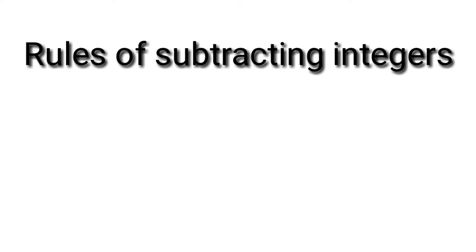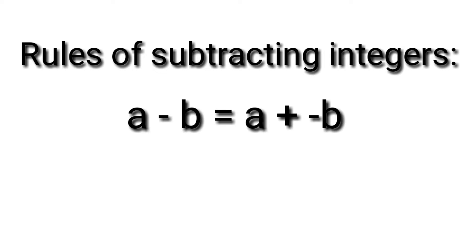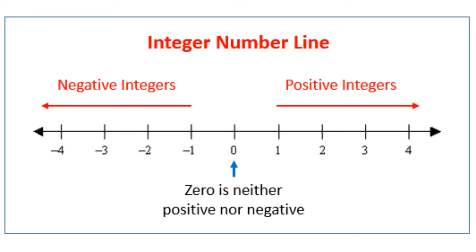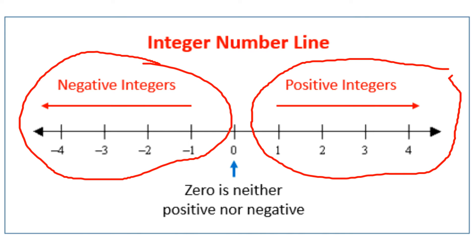We have rules for subtracting integers. These are: a minus b equals a plus negative b, and a minus negative b equals a plus b. It is very easy to subtract integers if you use the integer number line, which is composed of positive integers, negative integers, and 0, or the origin.